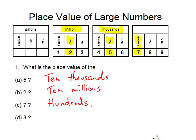The place value of the 3 is 3 millions. We've got 'units' here — units just mean ones. So it's ones of millions, or simply millions.